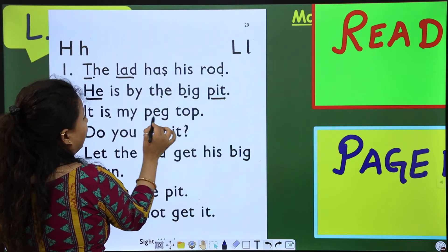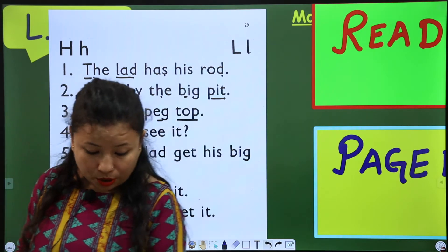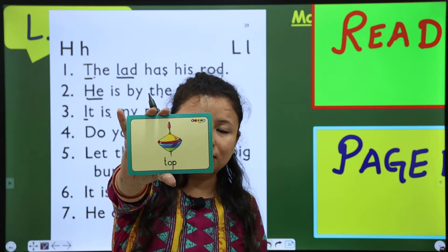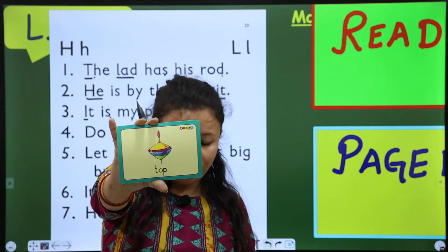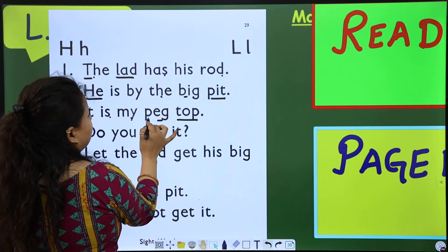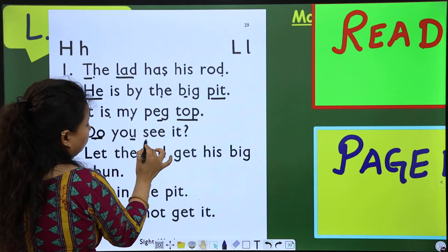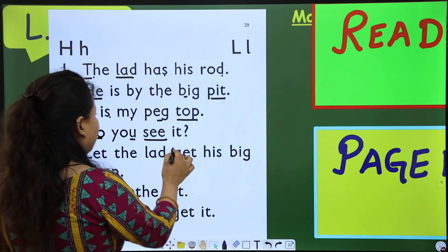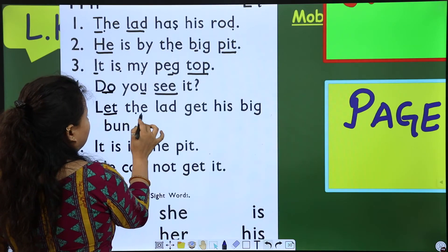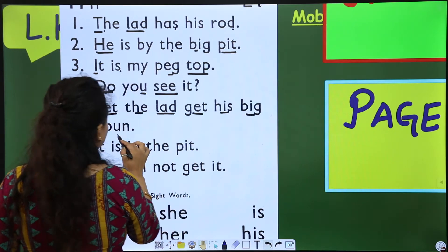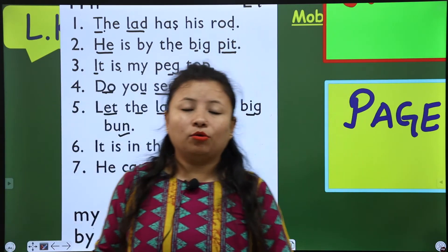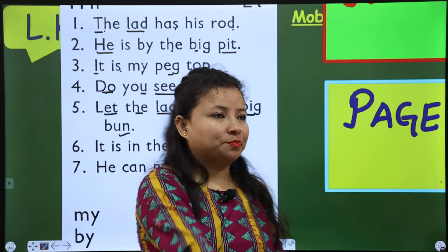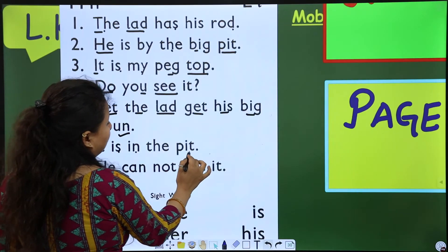'It is my pit. Top is a toy.' Look at this — top is a toy. 'Let the lad get his big bun.' Bun. Have you eaten a bun? Look at this — bun.